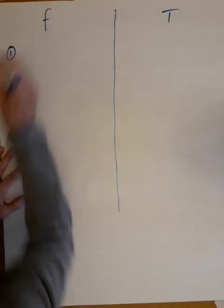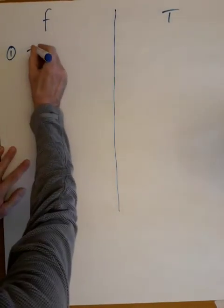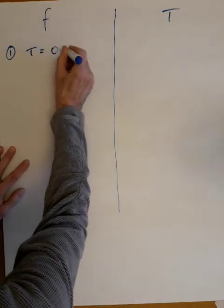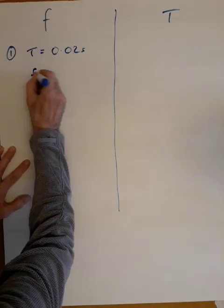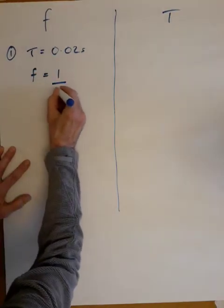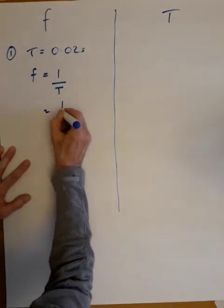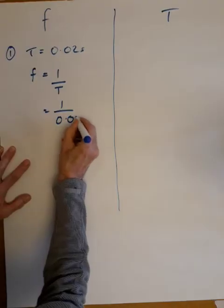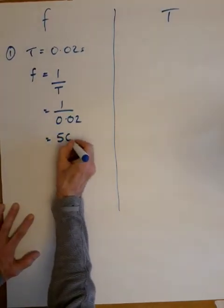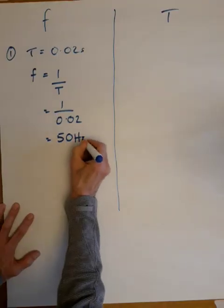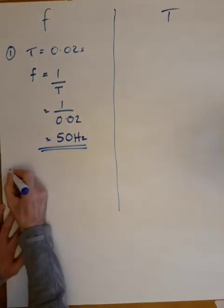In example 1, the periodic time is 0.02 seconds. Frequency is 1 over T, which is 1 over 0.02, and that is 50 hertz.